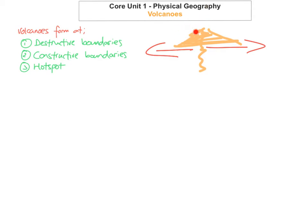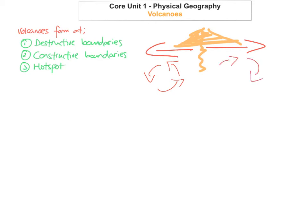An example of a constructive plate boundary volcano would be Surtsey in Iceland. This is where the North American plate is pulling away from the Eurasian plate. How volcanoes actually form here is because again, in the mantle, you have convection currents moving in opposite directions under each plate, causing the plates to separate. This is what we call constructive plate boundaries.